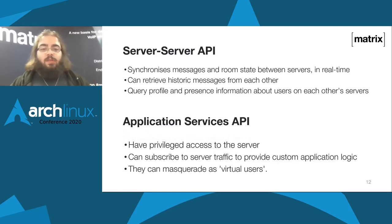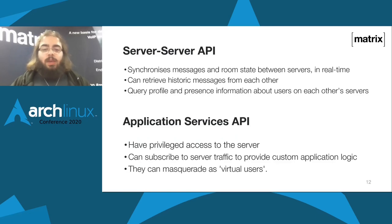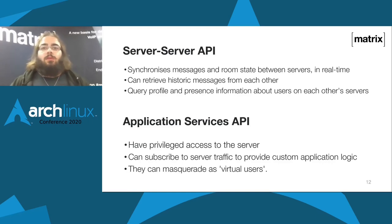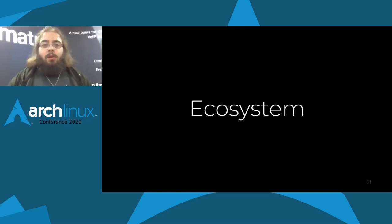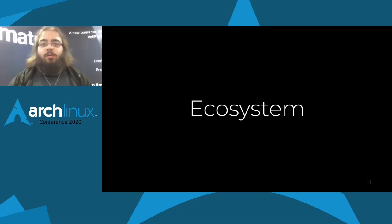The application services API is a kind of privileged version of the client-server API. Application services can puppet some users and create virtual users, so that if you're in a room that is bridged to IRC, you're going to see other IRC people as if they were Matrix users. That gives you a peek into the general Matrix ecosystem, which is pretty wide and very interesting.